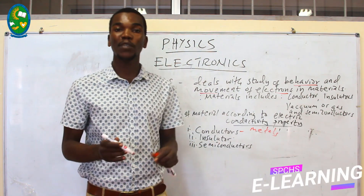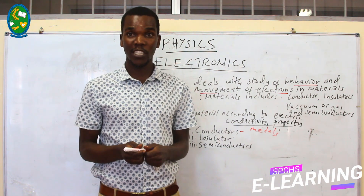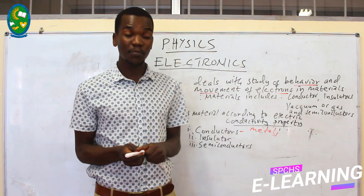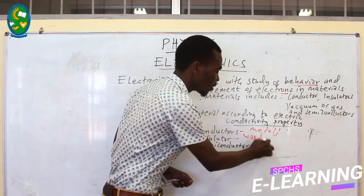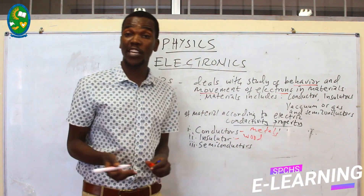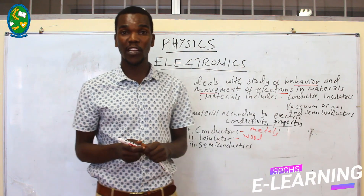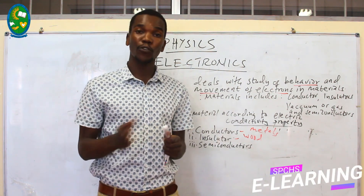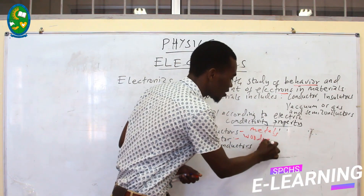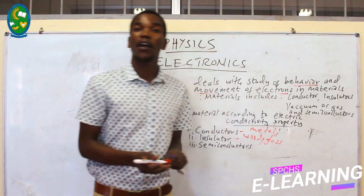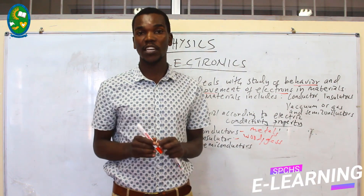The second type of materials are those which we call insulators. Insulators are those materials which mostly do not allow the flow of current through them easily. An example is wood — when we connect wood to an electric source or part of an electric field, there will be no current flowing through that material. Also, materials such as glass are examples which will not conduct electricity.